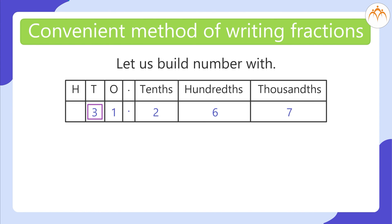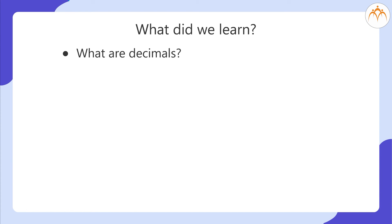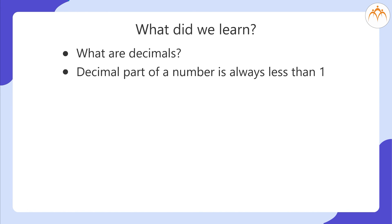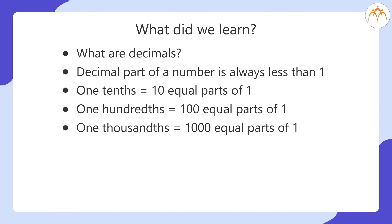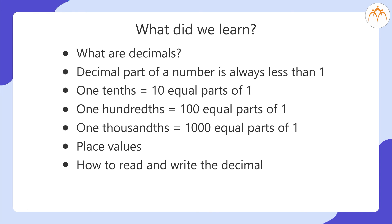Let us build another number: 3 in the tens place, 1 in the ones place, 2 in the tenths place, 6 in the hundredths place, and 7 in the thousandths place. What did we learn? Decimals: the decimal part of a number is always less than 1. 1 tenth equals 10 equal parts of 1. 1 hundredth equals 100 equal parts of 1. 1 thousandth equals 1000 equal parts of 1. We also learned place values, how to read and write decimals, and how to build a decimal number.